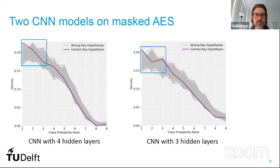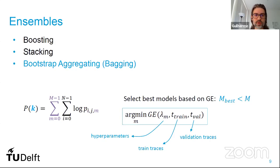Analyzing different models with small hyperparameter variations — or even retraining the same model twice — reveals different probability distributions. This motivated aggregating multiple models into an ensemble, combining their output probabilities to build a stronger model. A large set of models is trained, then a subset of best models is selected using side channel metrics such as guessing entropy.